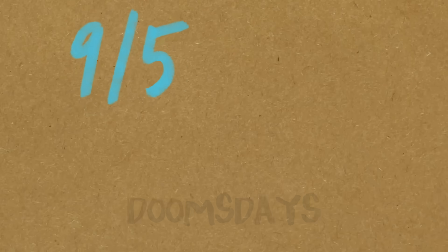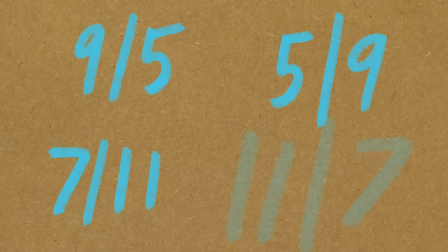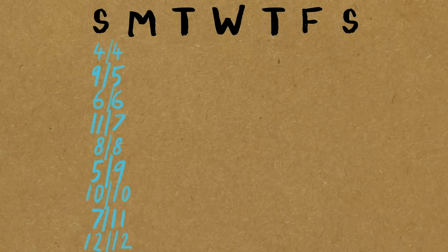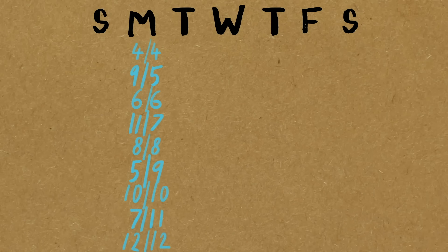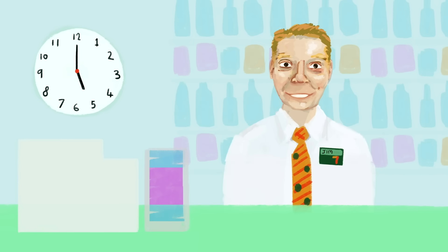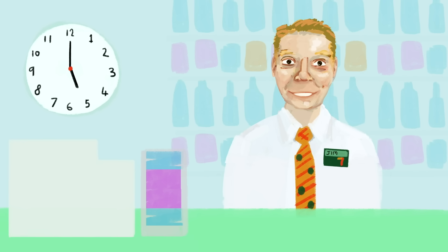There are some other special dates too. The 9th of the 5th, the 5th of the 9th, the 7th of the 11th, the 11th of the 7th — also share the same day of the week. Doomsday will change every year, but these dates all share the same day of the week. A nice way to remember these: I work 9 to 5 at the 7-11.